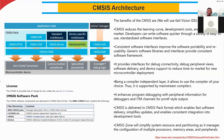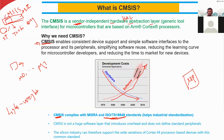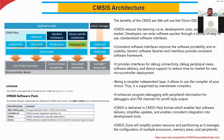Looking at the CMSIS architecture, the microcontroller has a core and peripherals including communication peripherals and specialized peripherals. The CMSIS pack is organized with RTOS — the real-time operating system — DSP digital signal processing drivers, and the peripheral HAL, which is the hardware abstraction layer. This is the overall architecture of CMSIS.